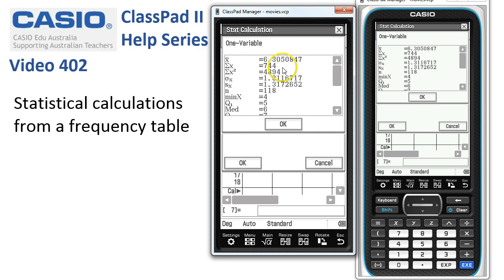We can read off that the mean is 6.305 for this data. Standard deviation is 1.31.